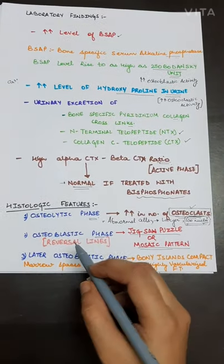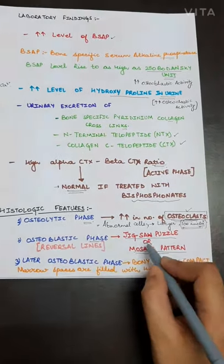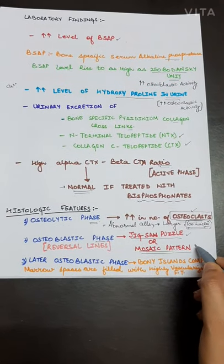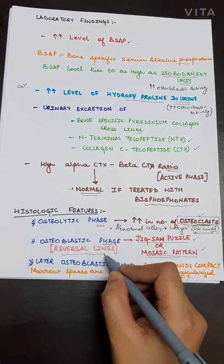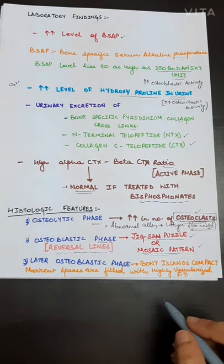The second phase is the osteoblastic phase which will give a typical jigsaw puzzle or mosaic pattern appearance and there will be an increase in the number of reversal lines or we will see reversal lines in this phase.